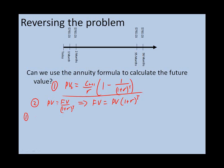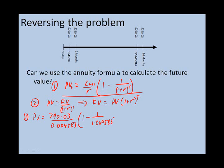Step 1: we calculate the present value. Present value equals the payments of $790.03, divided by the interest rate 0.004583, all multiplied by 1 minus 1 over 1.004583 to the power 96. If we do that calculation, we get $61,246.95. That's the present value of the annuity payments that your parents are going to make.